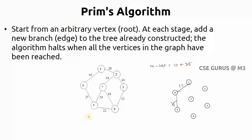After adding edge 6 to 5 with cost 25, three vertices are now visited. Consider the adjacents of all three visited vertices: from 1, vertex 2 has cost 28; from 5, vertex 7 has cost 24 and vertex 4 has cost 22. Among these, the minimum cost is 22, so we visit that edge next, connecting vertex 5 to vertex 4. Now four vertices are visited. Considering adjacents: 1 to 2 is 28, 5 to 7 is 24, 4 to 7 is 18, 4 to 3 is 12. The minimum is 12, so we visit edge 4 to 3.